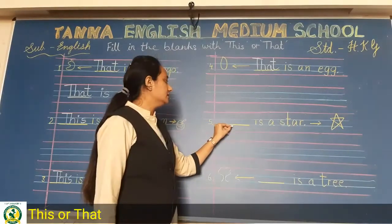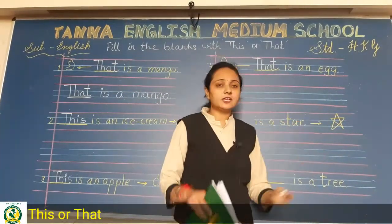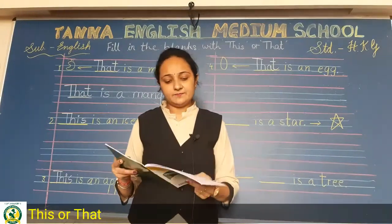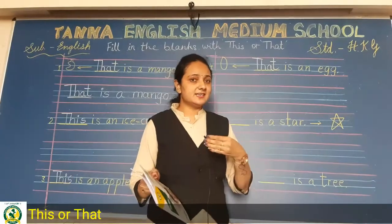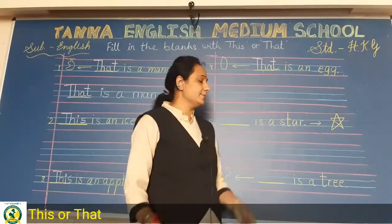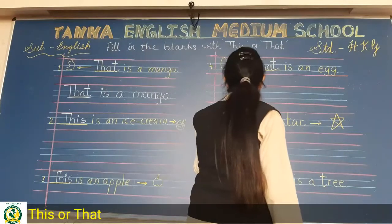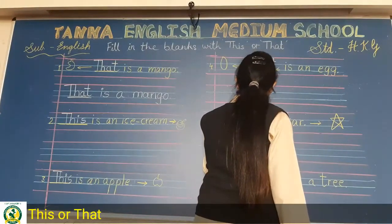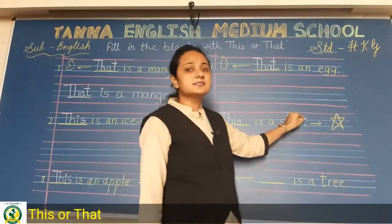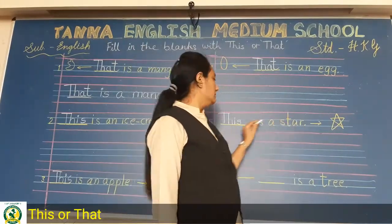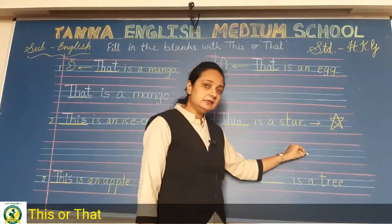Now the fifth one: dash is a star. Is the arrow here short or big? Yes, it is a short arrow, which means it is near. So what will you write here? 'This.' T-H-I-S, this. Read it as: 'This is a star.' Write the complete sentence on the line provided.